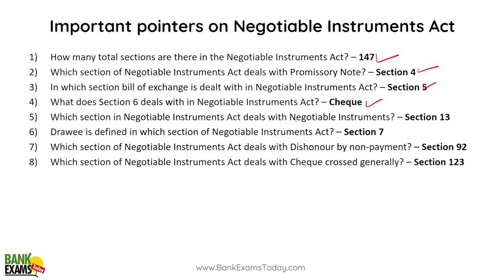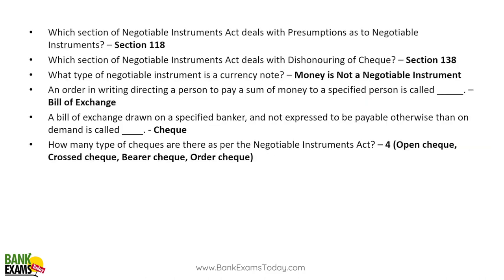Section 13 deals with negotiable instruments, Section 7 defines the drawee, and Section 92 deals with dishonor of non-payment. Section 123 deals with cheque crossing, Section 118 deals with presumptions as to negotiable instruments, and Section 138 deals with dishonoring of a cheque due to insufficient balance.